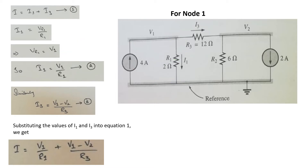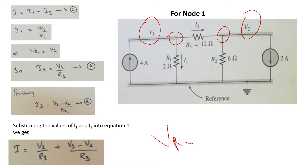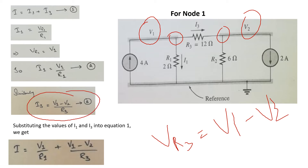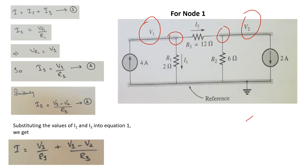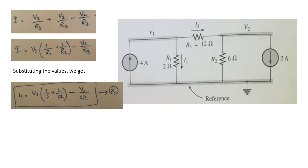Similarly, we have to find the value of I3. I3 is basically equal to the voltage across resistor 3 divided by the value of that resistor. Now you will see that on R3 there are two potentials, V1 and V2. When we are taking node 1, it means V1 is at higher potential and V2 is at lower potential. So we can write that Vr3 is equal to V1 minus V2. So the current I3 becomes I3 is equal to V1 minus V2 divided by R3.